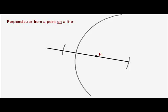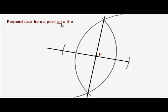So, perpendicular bisector, connect the line, and that line is now perpendicular to the other line, and it goes through P. It's a perpendicular from a point on a line.